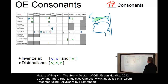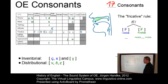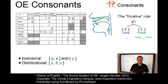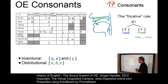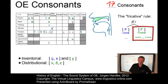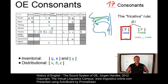Thus, we can establish the following rule — a fricative rule for Old English. Whenever we have one of these fricatives — labiodental, dental, or alveolar — we have two allophones. One allophone occurs in a voiced environment and it is voiced: V, Ð, and Z. The second one occurs in voiceless environments.